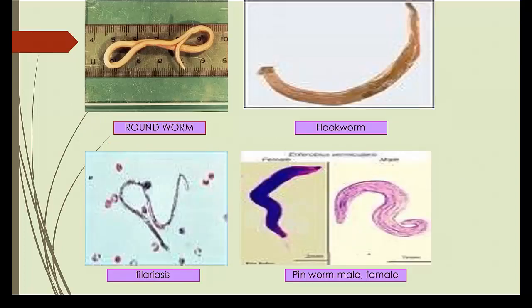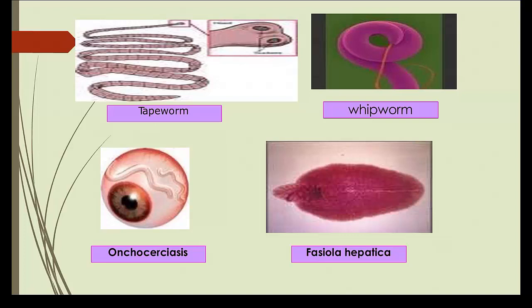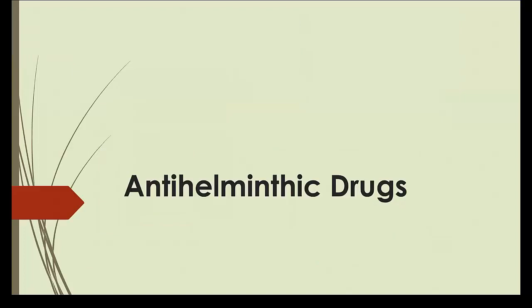Here are pictures of roundworm, hookworm, filariasis, and pinworm. This is tapeworm, whipworm, Fasciola hepatica (liver fluke), and onchocerciasis. Onchocerciasis causes river blindness. It is not prevalent in India, but it is a very important disease when you look at the world.